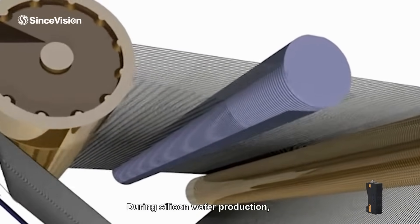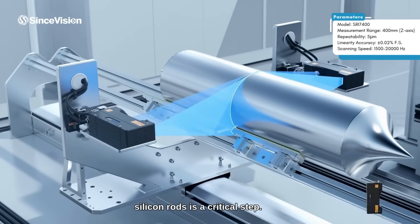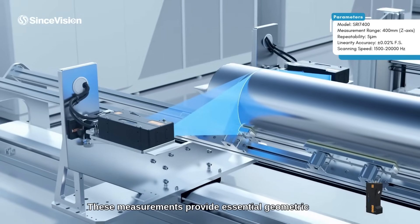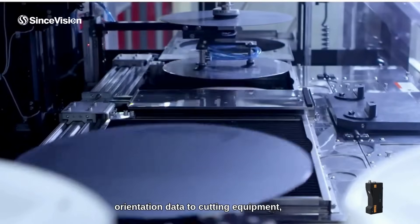During silicon wafer production, measuring the diameter of grown monocrystalline silicon rods is a critical step. These measurements provide essential geometric dimensions and crystal orientation data to cutting equipment.